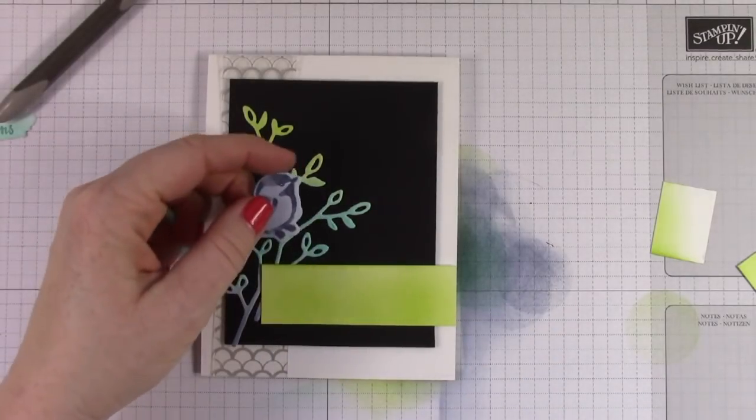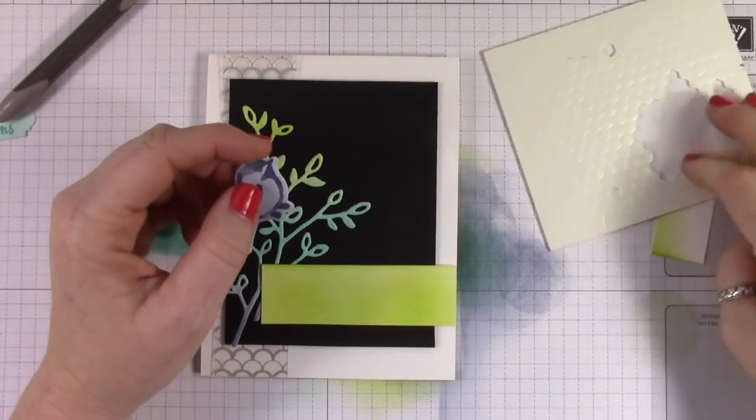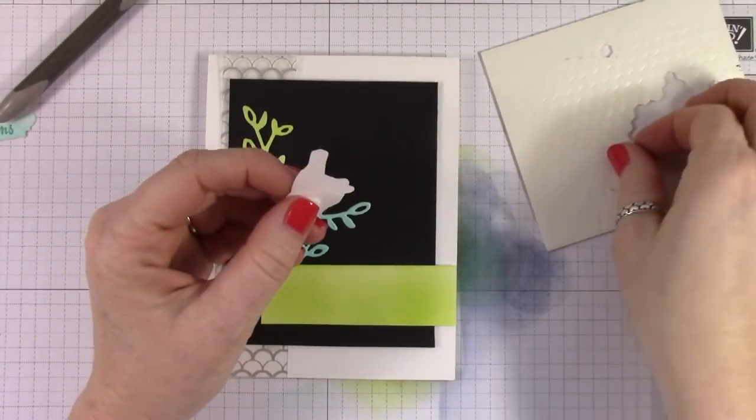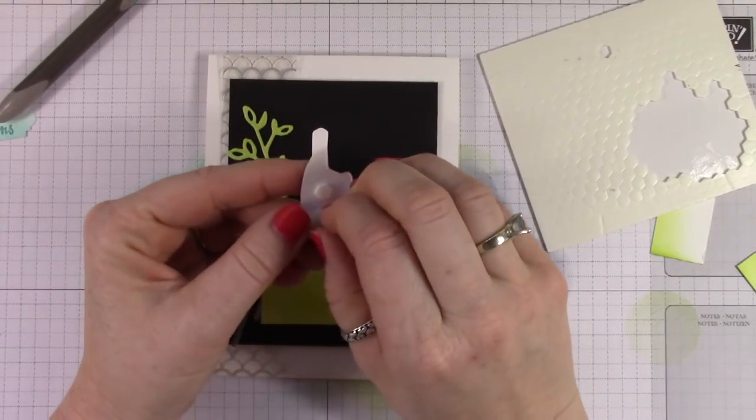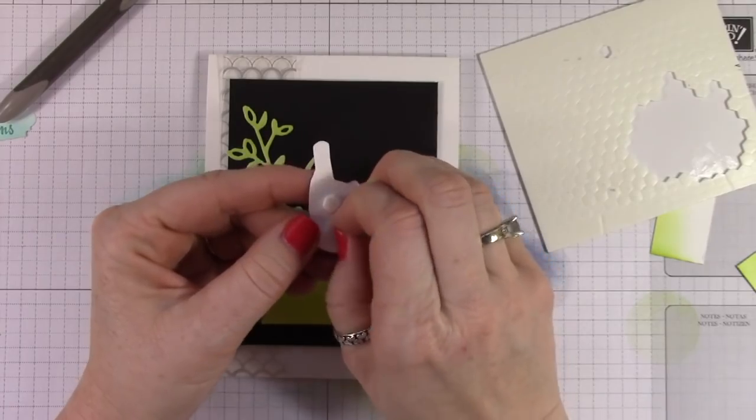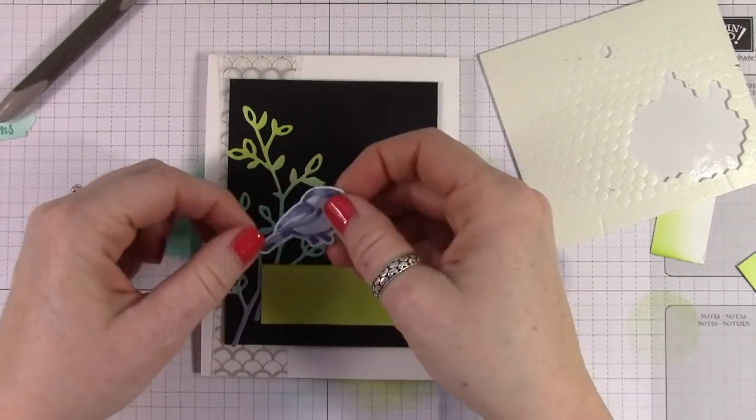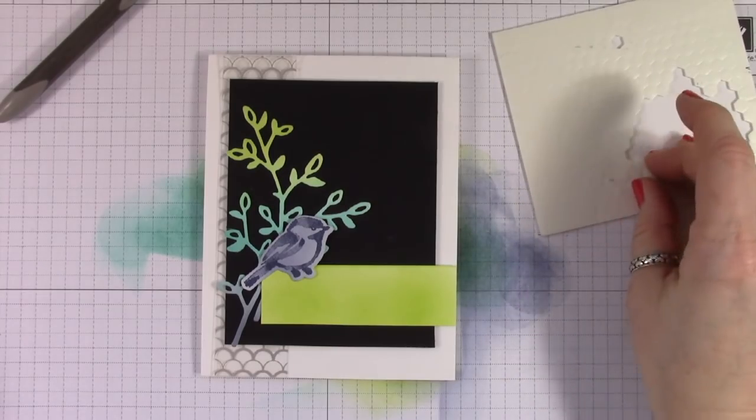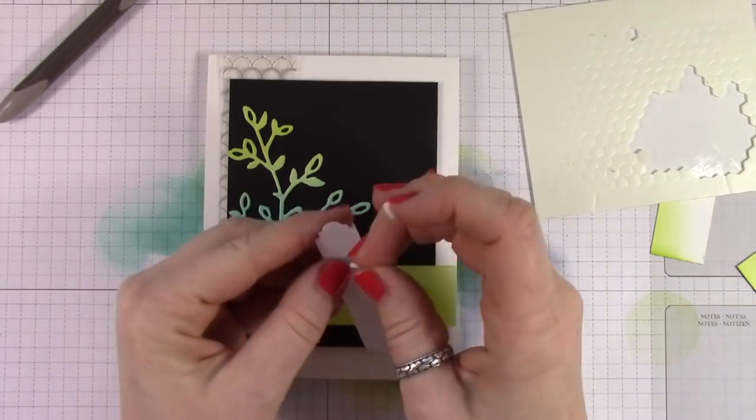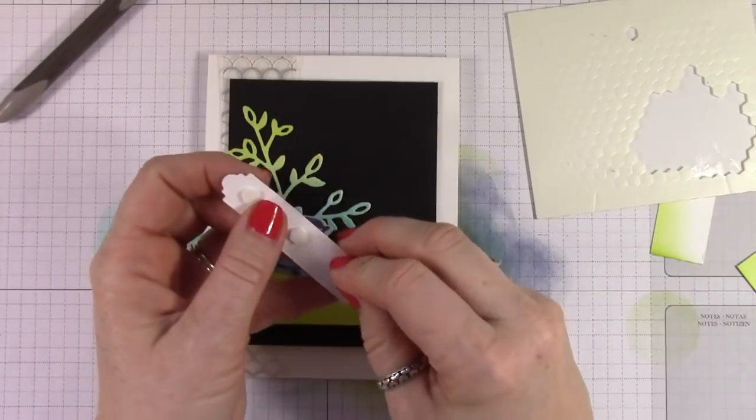So, I'm going to go ahead and layer this piece down here, and then I'm going to add my sentiment. Now, when I was doing my ink blending, I went ahead and took a piece of white cardstock and blended a little bit of that Bermuda Bay on the bottom of one piece, and then I stamped my sentiment above it. And here you can see I have this really pretty Night of Navy bird, and then this is the sentiment.